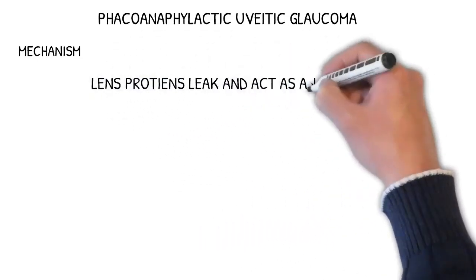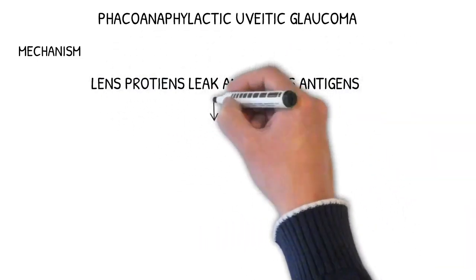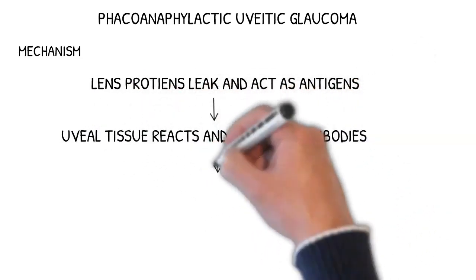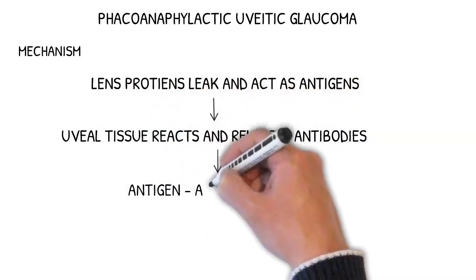Phacoanaphylactic uveitic glaucoma: here the lens proteins leak and act as antigens. Uveal tissue reacts and releases antibodies against these antigens. Antigen-antibody reaction takes place, leading to inflammation of uvea, which is uveitis.